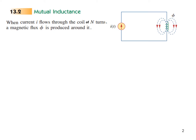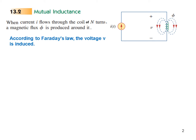When varying magnetic field lines cut a coil, a voltage is induced according to Faraday's law. So voltage V will be induced because of the flux cutting the coil.